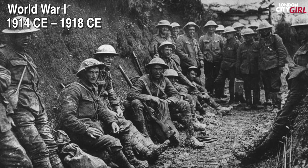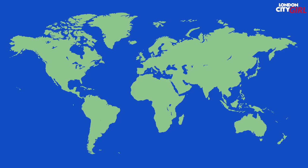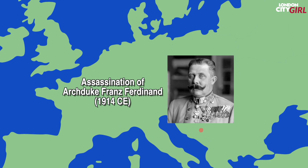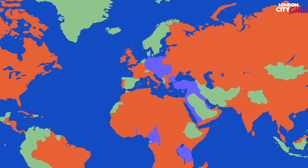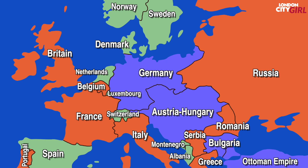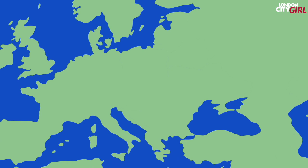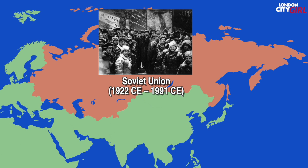Between 1914 CE and 1918 CE World War One took place. The assassination of Austro-Hungarian heir Archduke Franz Ferdinand by a Slav nationalist set off a crisis in Europe as entangled international alliances were invoked and the major European powers went to war. The conflict spread around the world and this was industrialised warfare on an epic scale. By the end of the war or soon after, the German, Russian, Austro-Hungarian and Ottoman empires all ceased to exist and the map of Europe was redrawn. The misery of World War One triggered the Russian Revolution of 1917 CE which led to the creation of the world's first socialist state and the formation of the Soviet Union in 1922 CE.